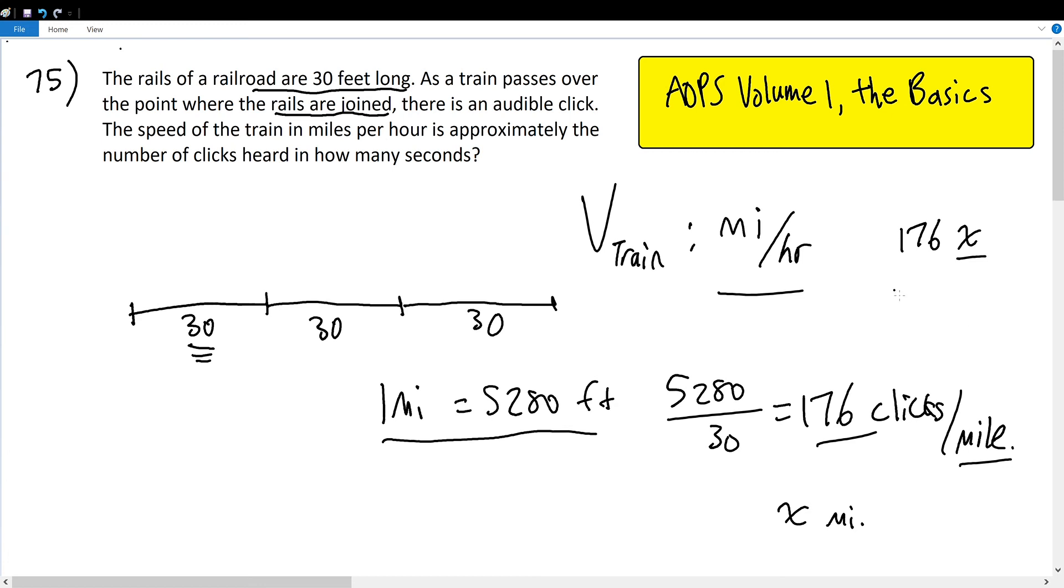And how many seconds are there in one hour? Because we're told that the train is measured in miles per hour and we need to find it in clicks per second. So 176 times x would be the number of clicks in x miles, and one hour is equal to 3,600 seconds, so the denominator becomes 3,600 seconds.